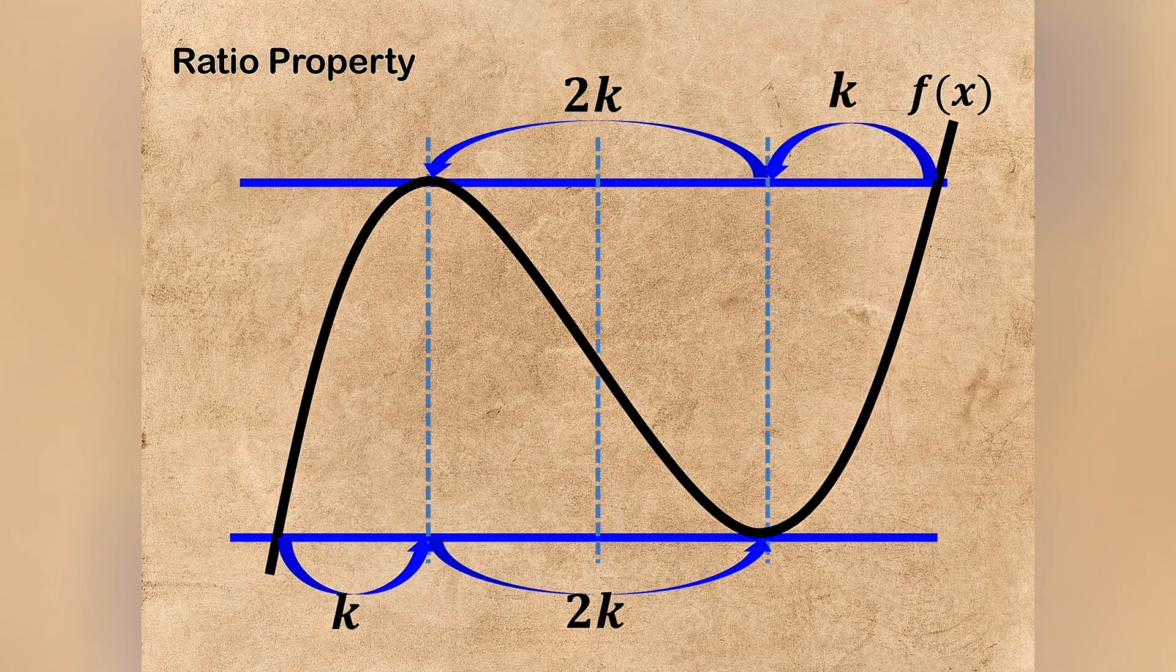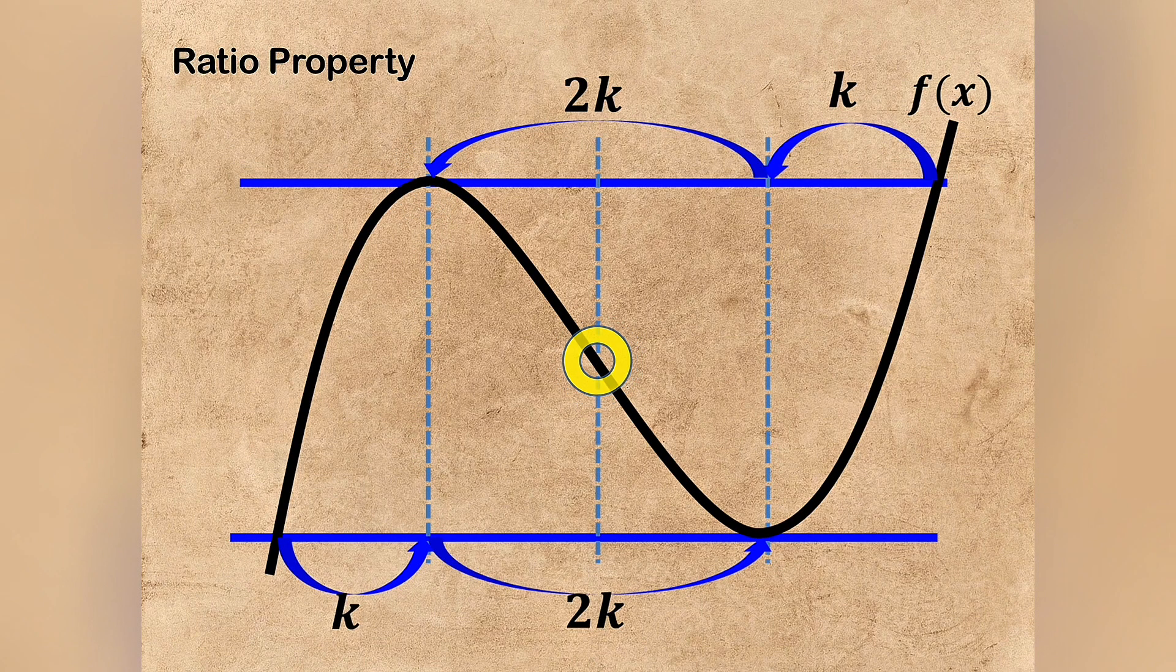Now we have a graph of a cubic function. There is a local max, inflection point, and local min.